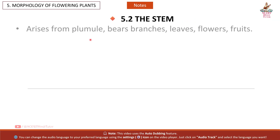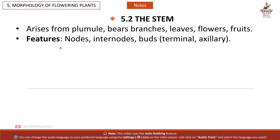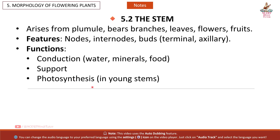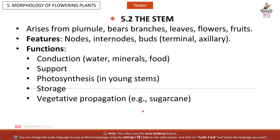5.2 The Stem: Arises from the plumule. Bears branches, leaves, flowers, and roots. Features include nodes, internodes, and buds — both terminal and axillary. Functions: conduction of water and minerals, support, photosynthesis in young stems, storage, and vegetative propagation, e.g. sugarcane.